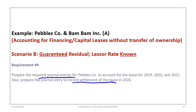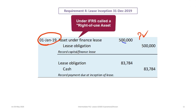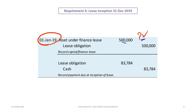We now proceed with requirement four: journal entries for 2019, 2020, 2021, and the settlement in 2026. On January 1, 2019, we enter into the lease: debit the asset under finance/capital lease (right-of-use asset under IFRS) for $500,000 and credit the lease obligation for $500,000. We also record the first payment: debit lease obligation $83,784 and credit cash $83,784. These two entries can be offset if preferred.